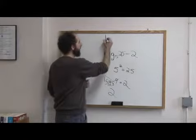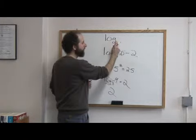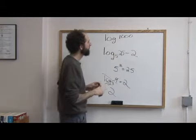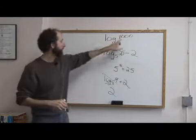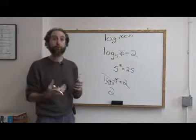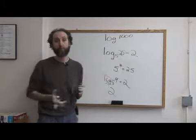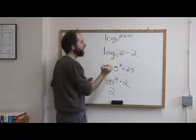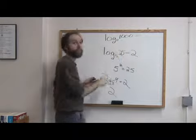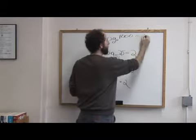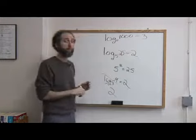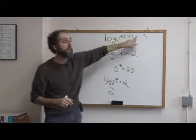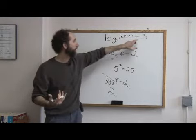One last thing. If you see a log with no base written, so log 100, actually let's do a thousand. If they don't tell you the base, it's an assumed 10. That's the agreement mathematicians have. So if there's no number written here, it's like it's a 10. You ask yourself, 10 to the what is a thousand? The answer is 3. 10 cubed is a thousand. So log base 10 of a thousand equals 3.